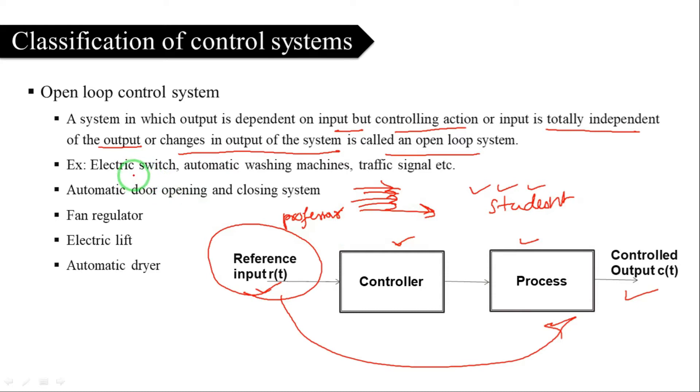This is an example of an open-loop system. Now we have another example: an electrical switch — an on/off switch. In an open-loop system, the switch is simply turned on or off.